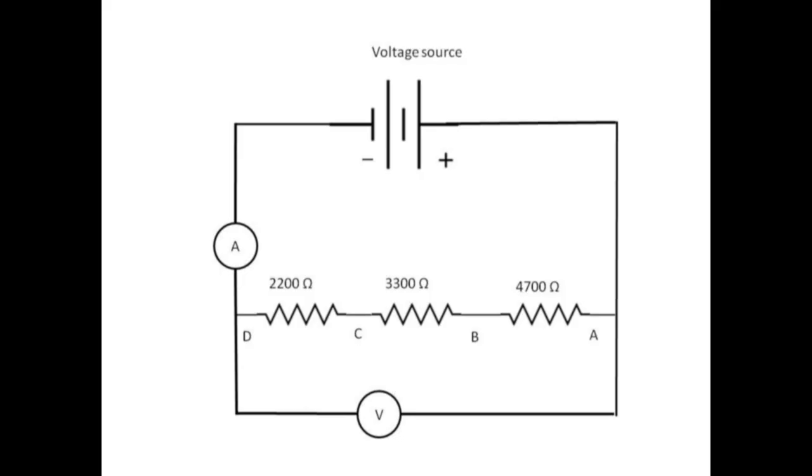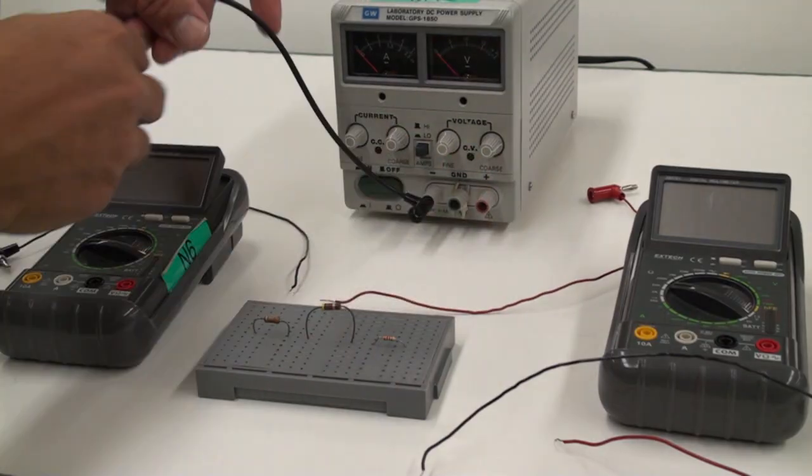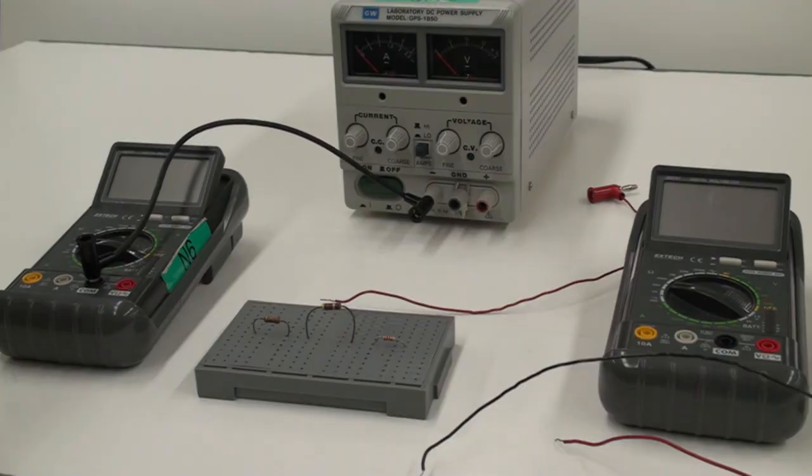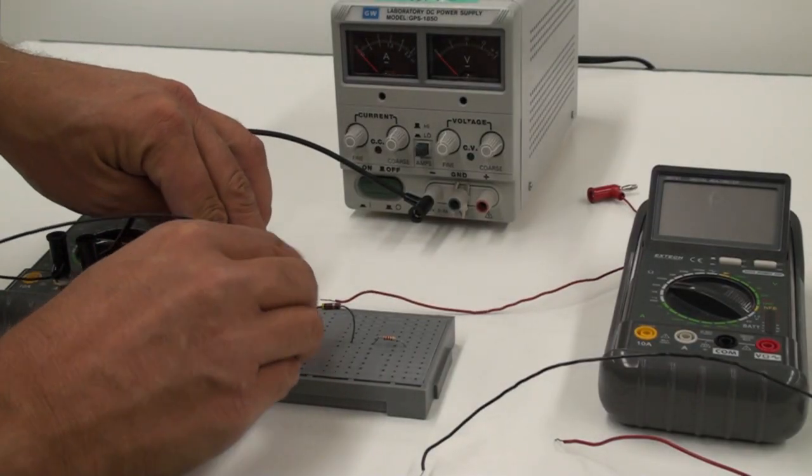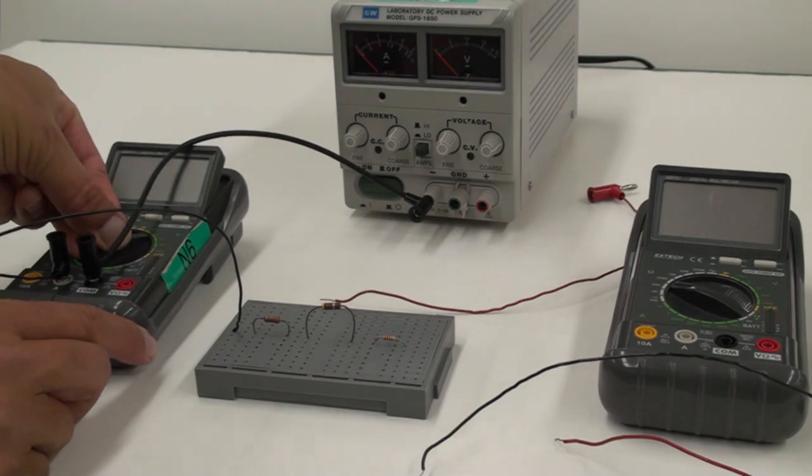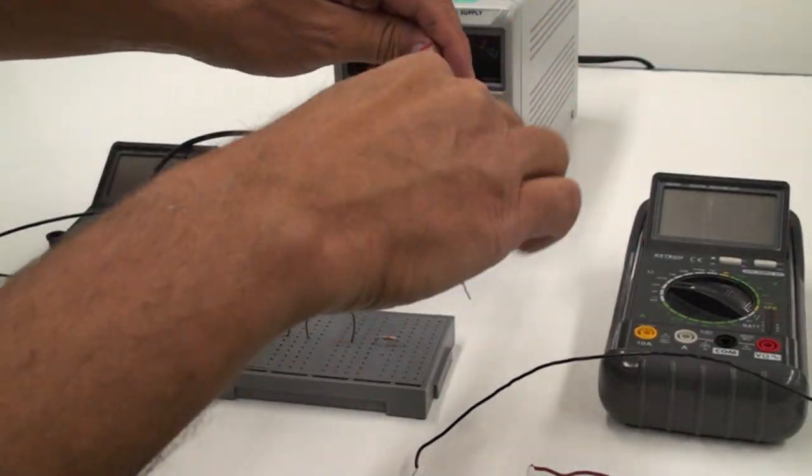You will systematically move the voltmeter to measure the voltage drop across each resistor separately. The left hand multimeter is being used as an ammeter. The voltage source is placed across the series combination and the voltage VAD is set precisely to 15 volts.